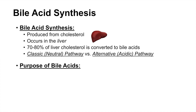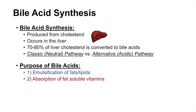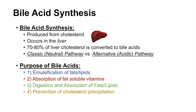Bile acids have specific purposes. They are important for emulsifying fats and lipids from our diet, and for the absorption of fat-soluble vitamins. They are also important for the digestion and absorption of fats and lipids. They prevent cholesterol precipitation — since they are produced from cholesterol, high levels of cholesterol can be processed into bile acids — and they are also important in eliminating cholesterol.